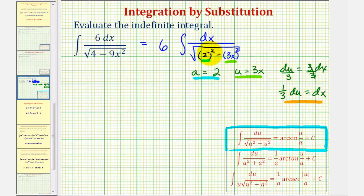Let's rewrite this in terms of u and then apply the integration formula. We still have the 6, and dx equals one-third du. Let's factor out the one-third, and we have du divided by the square root of a squared minus u squared. Let's verify that's correct.